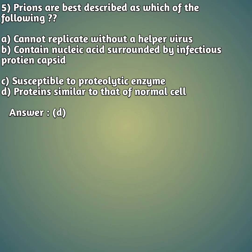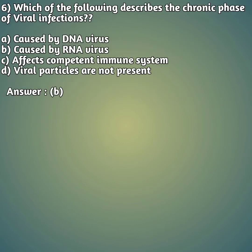Fifth question: prions are best described as which of the following? Option A: cannot replicate without a helper virus. Option B: contain nucleic acid surrounded by infectious protein capsids. Option C: susceptible to proteolytic enzyme. Option D: protein similar to that of normal cells. The right answer is D — prions are proteins similar to those of normal cells.